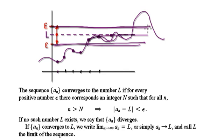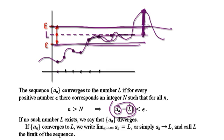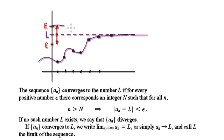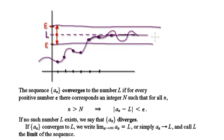You can interpret this as the sequence staying within this line and this line. Because if you go beyond this — if you look at the actual sequence, take away capital L here — the magnitude of this is now bigger than the epsilon here. The epsilon is from here to here. So you can interpret this as the sequence staying within here and within here.